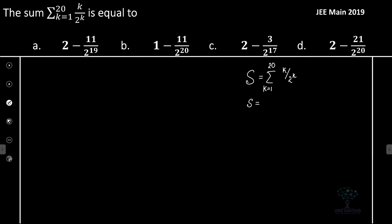So what is the sum? That will be equal to k equal to 1, so 1 by 2 plus 2 by 2 square plus 3 by 2 to the power 3 plus dot dot dot, let's go ahead and it will be 20 divided by 2 to the power 20. So that's equal to the sum.